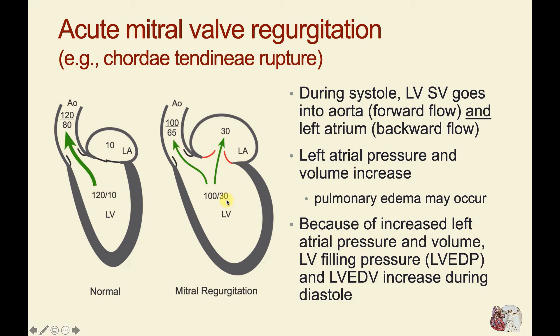There are some other changes depicted in this figure. The systolic pressure of the left ventricle may be reduced because not as much blood is going into the aorta — forward flow into the aorta may be reduced, so aortic pressure may be reduced. If aortic systolic pressure is 100, then left ventricular pressure would be about 100.